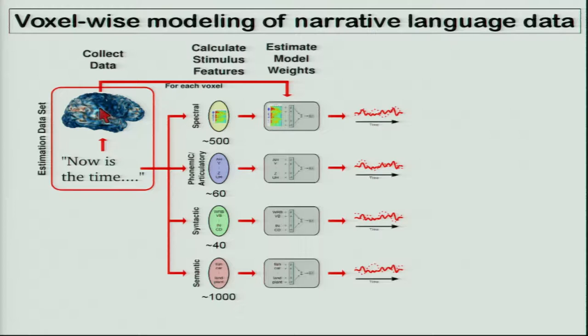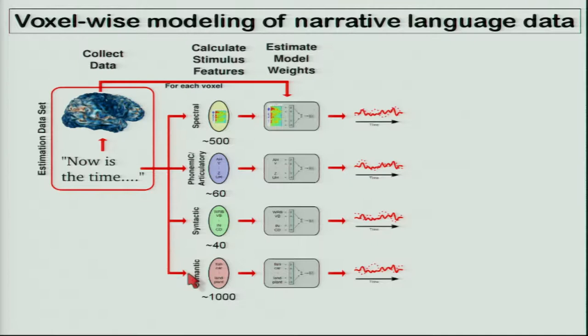The first thing we need to do is build a model. If you think about how stories are represented in the brain, they're probably represented at multiple scales. There's spectral information represented in the cochlea and subcortical nuclei, phonemic and articulatory information somewhere in the brain, syntactic information — because although few of us can explain the syntactic rules of our native languages, we all follow them — and semantic information on both short and long timescales.